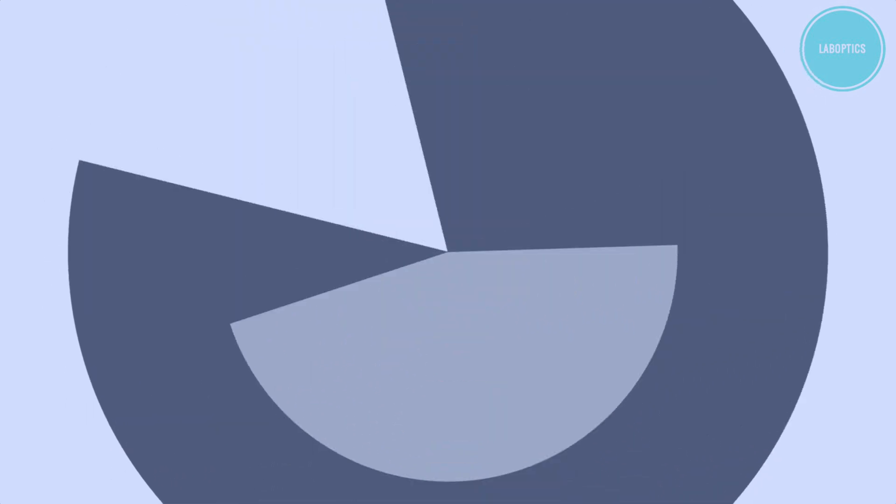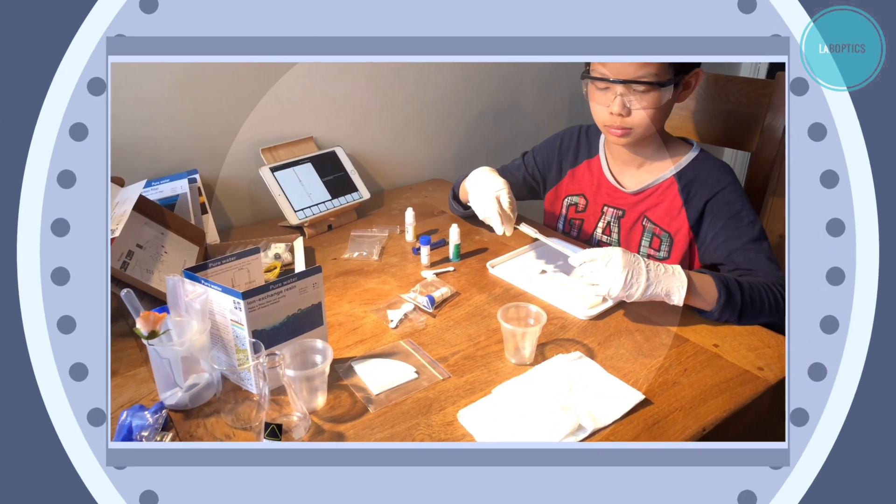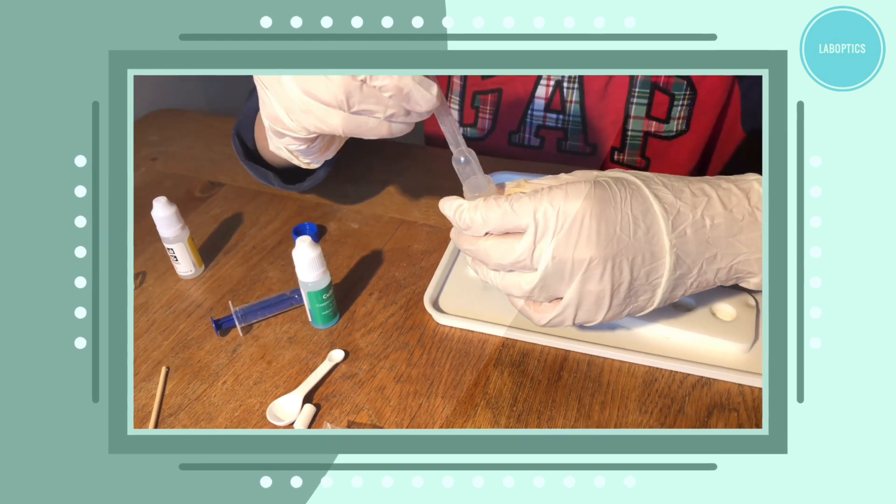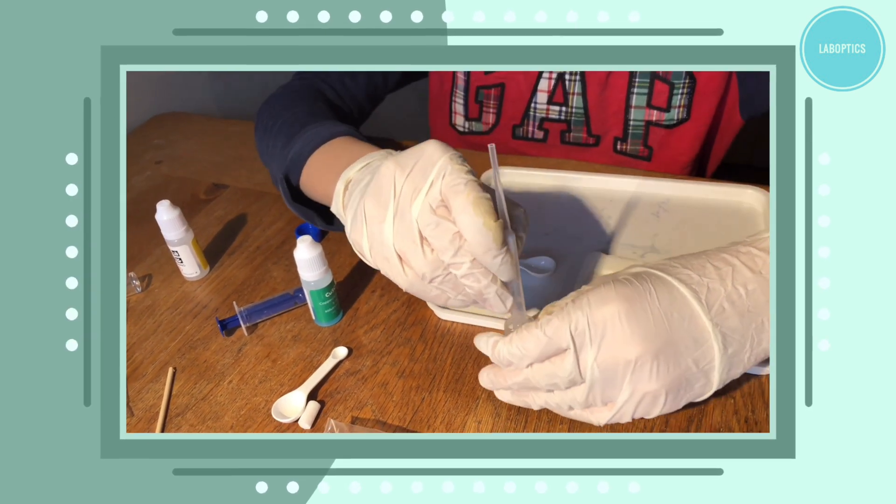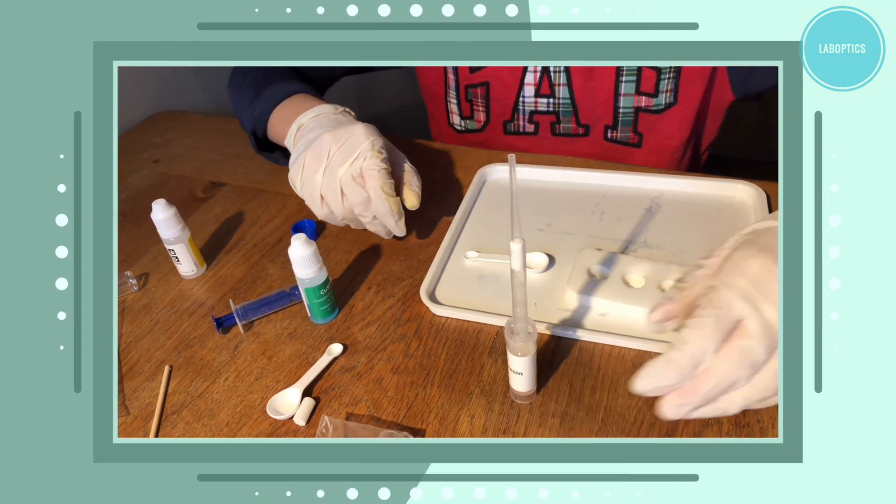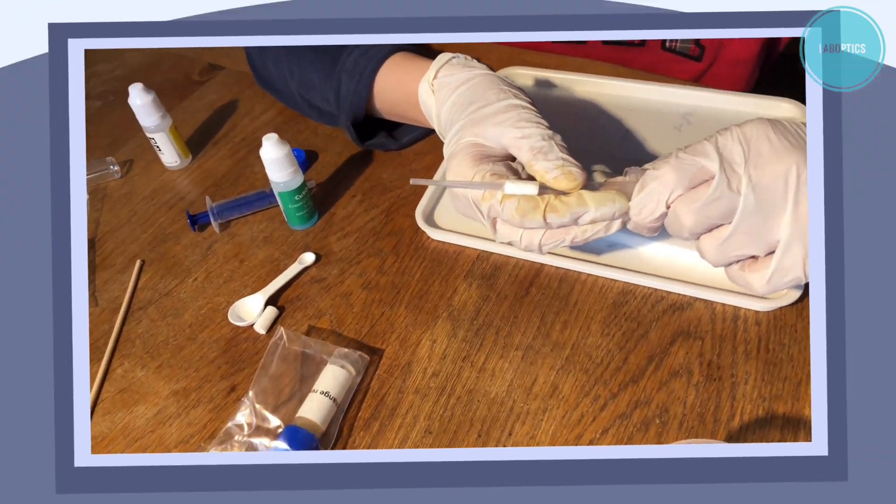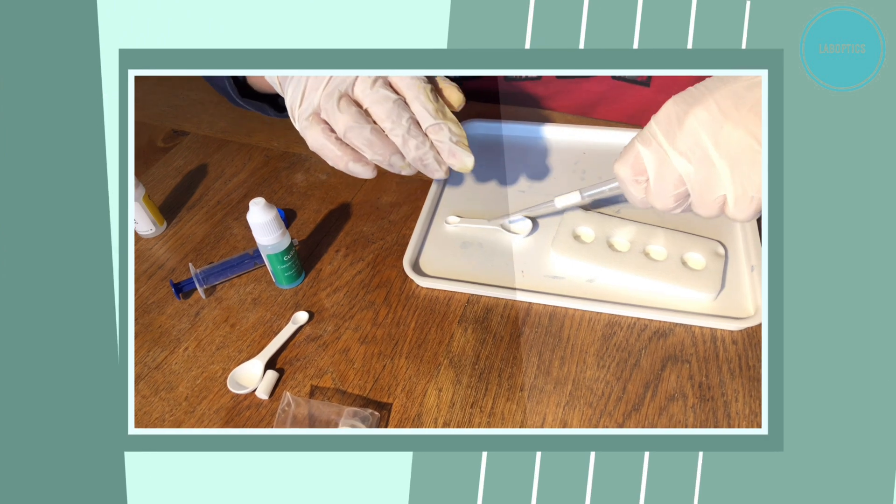Firstly we will insert a cotton cylinder into this cut pipette using a wooden stick. Then we will insert the wide end of the cut pipette into the vial of resin. After this we will tilt the cut pipette horizontally and then vertically to collect some of the resin in it.